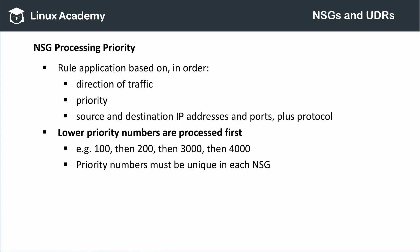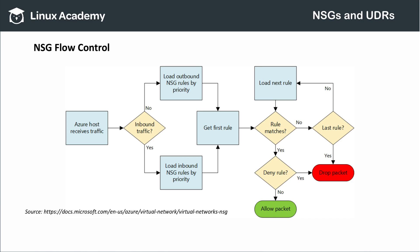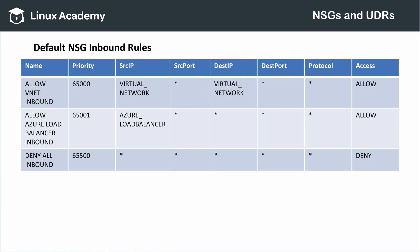All rules in a network security group must have a unique priority number. Looking at the flow chart: Azure receives the network traffic and retrieves the relevant rules sorted by priority in ascending order. The lowest-numbered priority rule is applied first. If the rule does not match, Azure gets the next rule and tests it. This loop continues until there are no more rules to process or a rule matches on source and destination IP addresses, ports, plus protocol. Once that match is made, Azure discards the traffic if the rule is deny, or sends along the packet if the rule is allow.